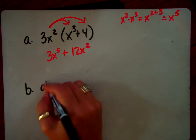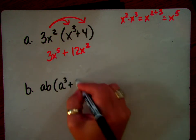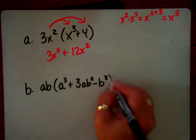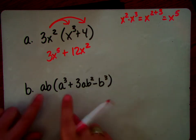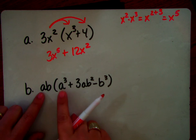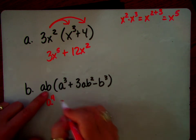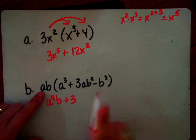For b, here's another example. ab times a cubed plus 3ab squared minus b cubed. Okay, so our problems are going to get bigger and bigger. So here, how many a's do I have? I have 1a here, and I'm adding 3 more a's. So now I have 4 a's, and I have this b. Now I go to the second term. See that 3? That 3 is going to stay. How many a's do I have? I have 1 outside, 1 inside. That's 2. How many b's?